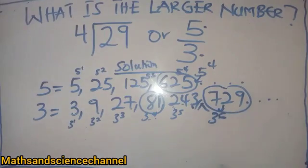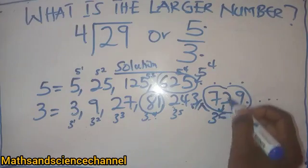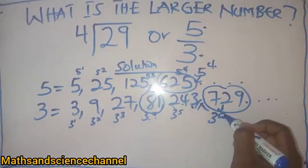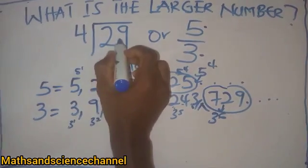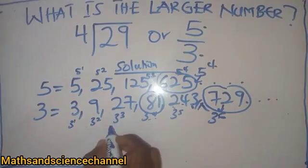So that becomes 3 raised to the power 6 right now. So I'm picking 5 raised to the power 4, 3 raised to the power 6 in this case. So now let's look at it.